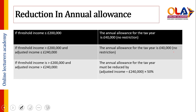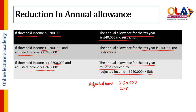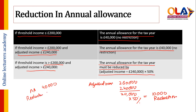You can see in this chart a summary of the overall rule. If threshold income is less than or equal to £200,000 — no need for calculation, the amount is fixed at £40,000. If threshold income is above £200,000 but adjusted income is up to £240,000 — again, no calculation required. But if threshold income is above £200,000 and adjusted income is above £240,000, then the calculation is: excess amount multiplied by 50%. For example, if adjusted income is £260,000, the threshold is £240,000, so excess is £20,000 × 50% = £10,000 reduction. So annual allowance of £40,000 minus £10,000 reduction gives current year annual allowance of £30,000.